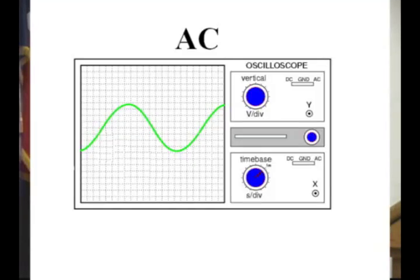AC is where the electrons aren't really flowing in one direction — they're moving back and forth. If you look at a typical AC signal on an oscilloscope, it is a sinusoidal wave, meaning electrons flow one way at one time and the other way at another time. Even though they're just oscillating in the wire, you're still transmitting electrical energy, which is what does the work.